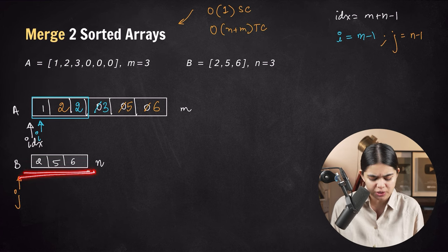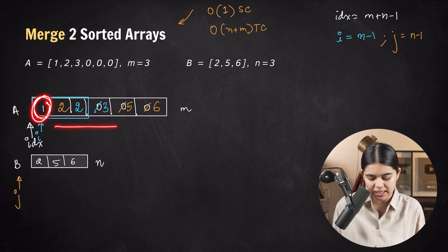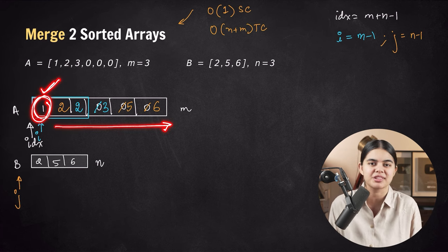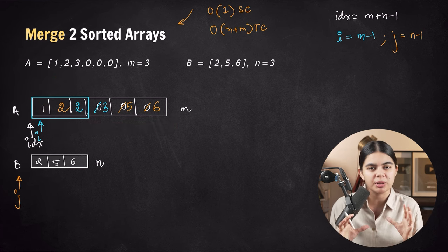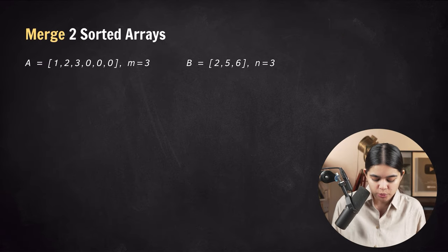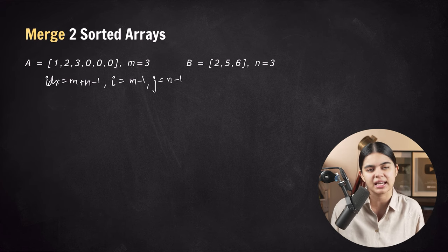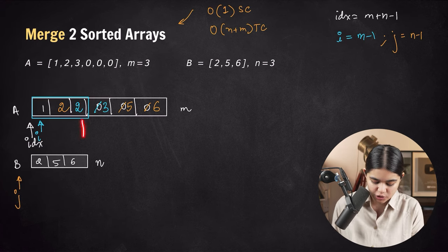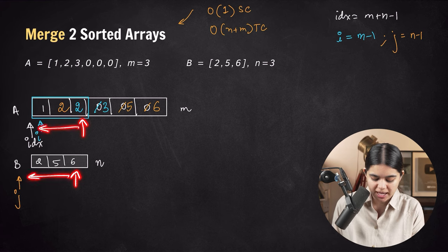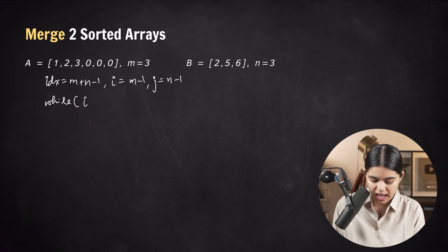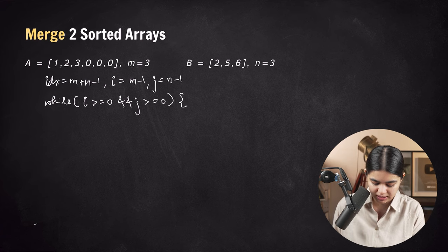Because only element 1 remains in A and all other elements have reached their right places, 1 is already in its correct position. Now let's write the pseudocode. We initialize index with m plus n minus 1, i with m minus 1, and j with n minus 1. We run a loop while i is greater than or equal to 0 and j is greater than or equal to 0.